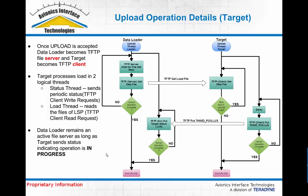Once the upload is accepted by the target, the target becomes a TFTP client while the data loader goes into purely being a TFTP server. The target processes a load in two logical threads. One thread is sending the periodic status update — collecting at a regular rate the current status information of the load operation, and doing a TFTP write request to send that status in an LUS file to the data loader for display to the user and to indicate the operation is still going and what the progress is.